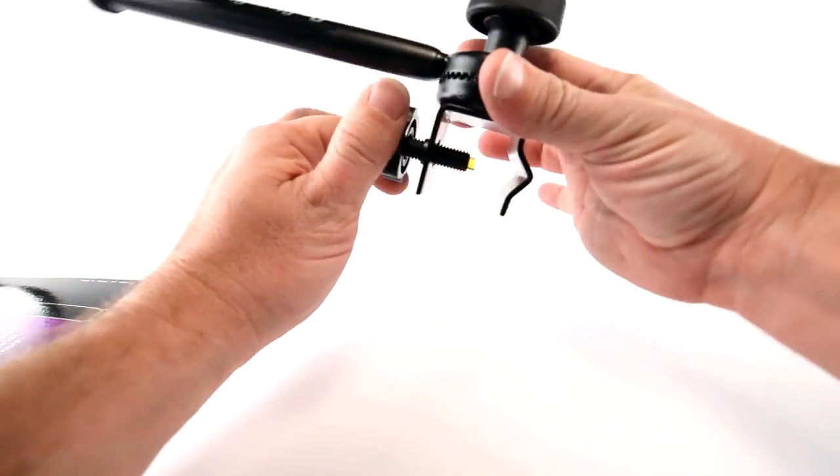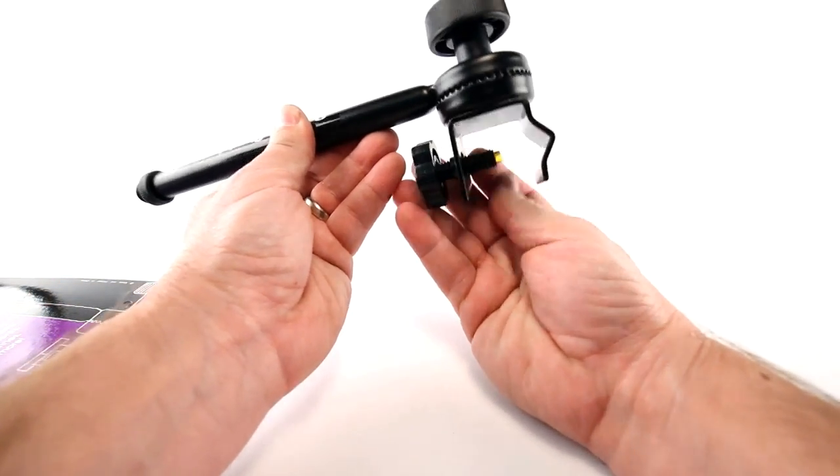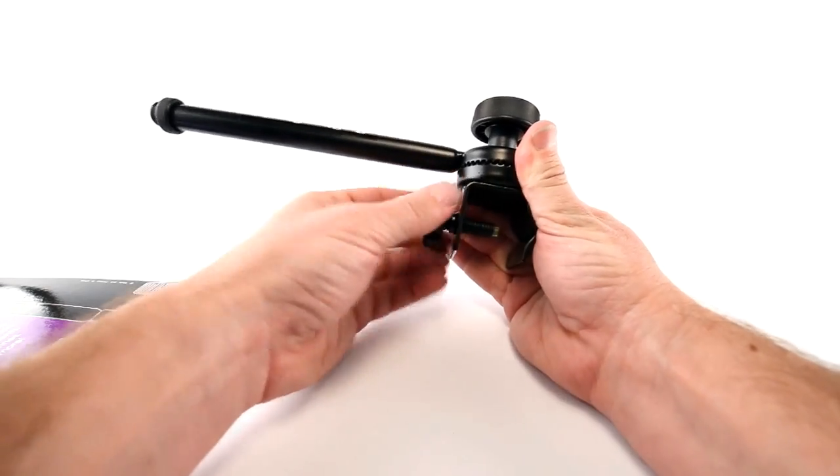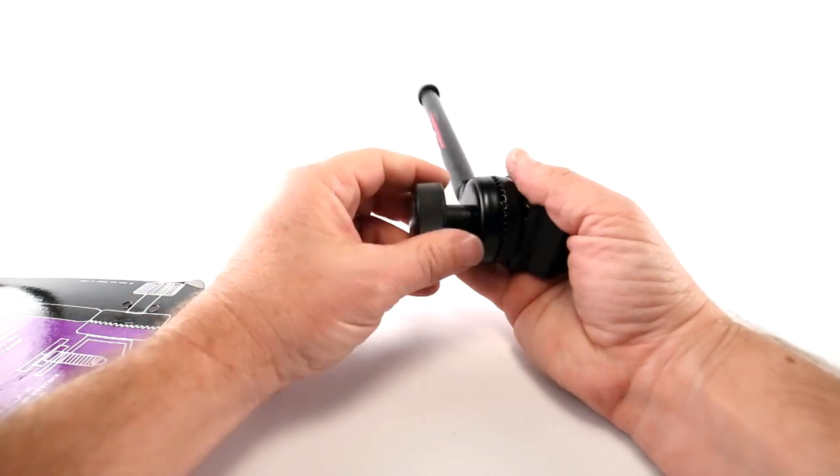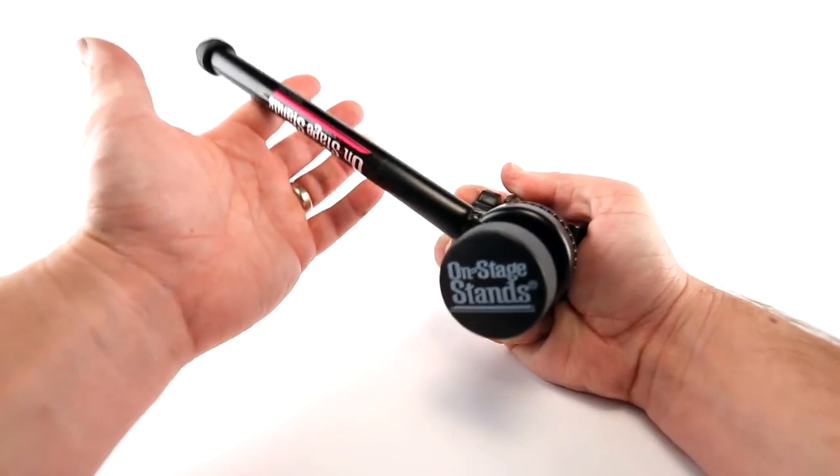This little yellow thing is to help it grip. It's going to compress down as the boom gets tightened onto a stand. The knock on this little mini boom is that once it's locked down if you rotate it you can snap off this little rubber nylon tip that helps hold it in place. So once you lock it in don't rotate it.